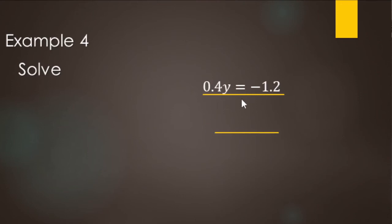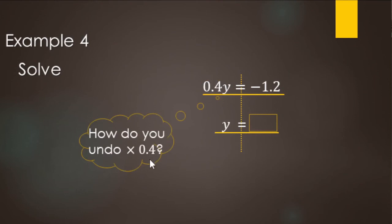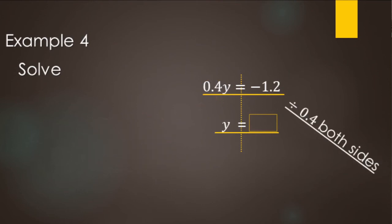We have 0.4y equals negative 1.2, and we're finding the value for y that makes the equation true. What's being done to y? It's being multiplied by 0.4. Division undoes multiplication, so we divide both sides by 0.4. On the left, 0.4 divided by 0.4 cancels, leaving y. On the right, negative 1.2 divided by 0.4: a negative divided by a positive makes a negative. For 1.2 divided by 0.4, move the decimal one spot to get 12 divided by 4, which equals 3. So y equals negative 3.